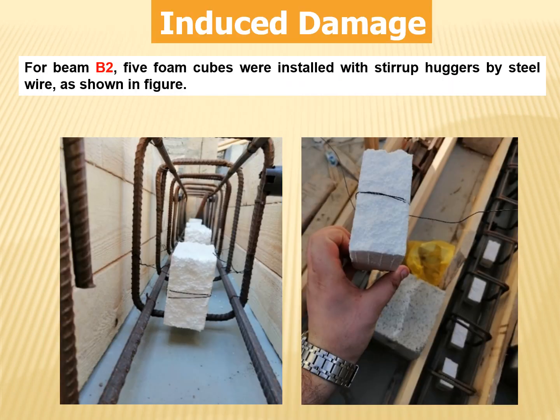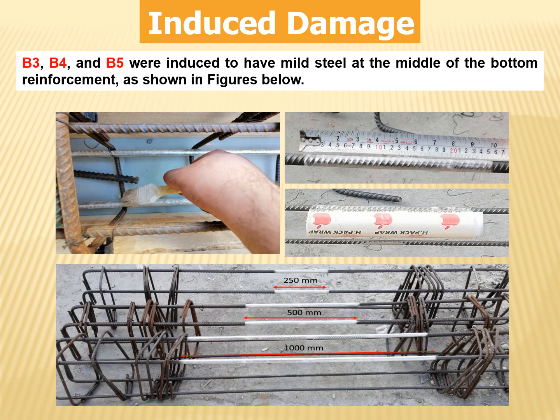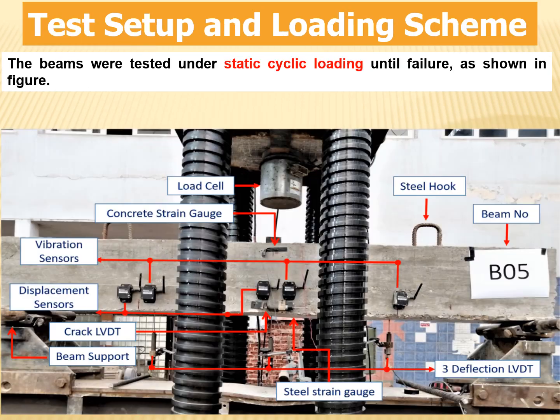To induce damage for beams B2 and B5, foam cubes were installed with steel hangars by steel wire, as shown in the figure. Beams B3, B4, and B5 were induced to have mild steel at the middle bottom reinforcement, as shown in the figure below.